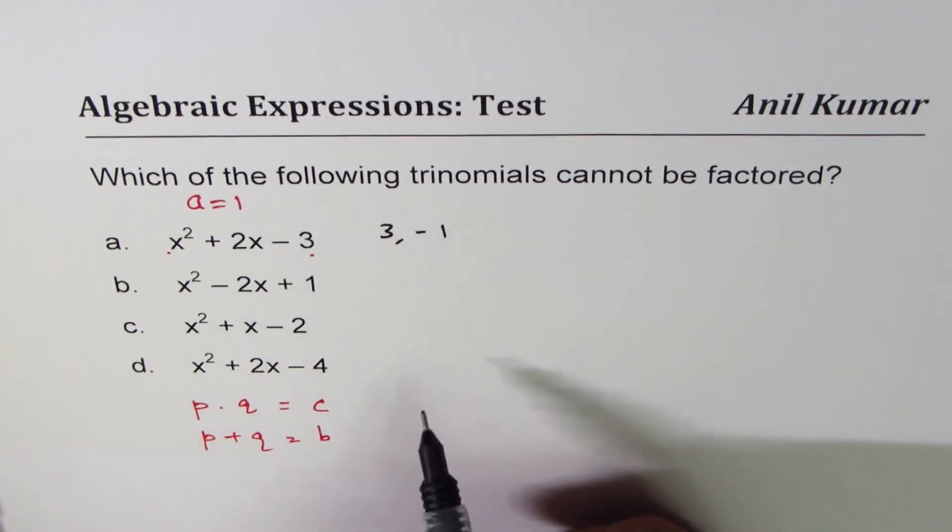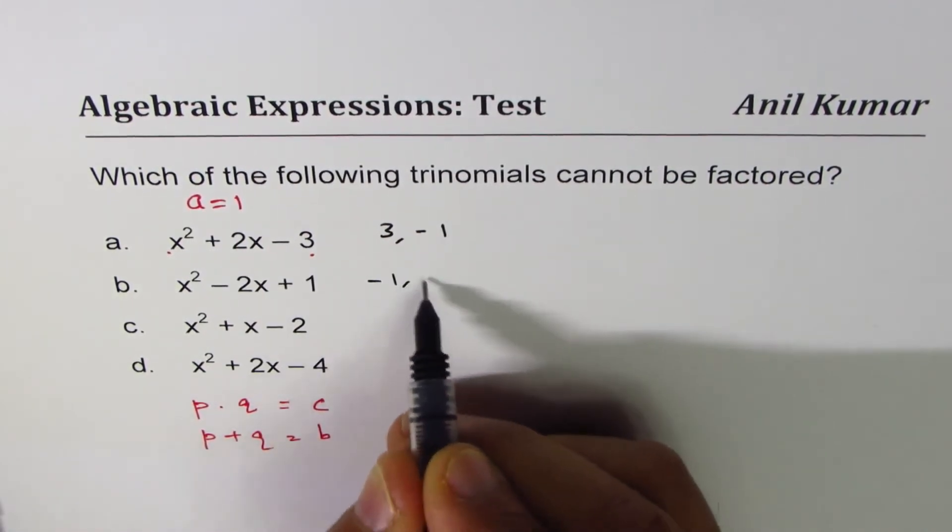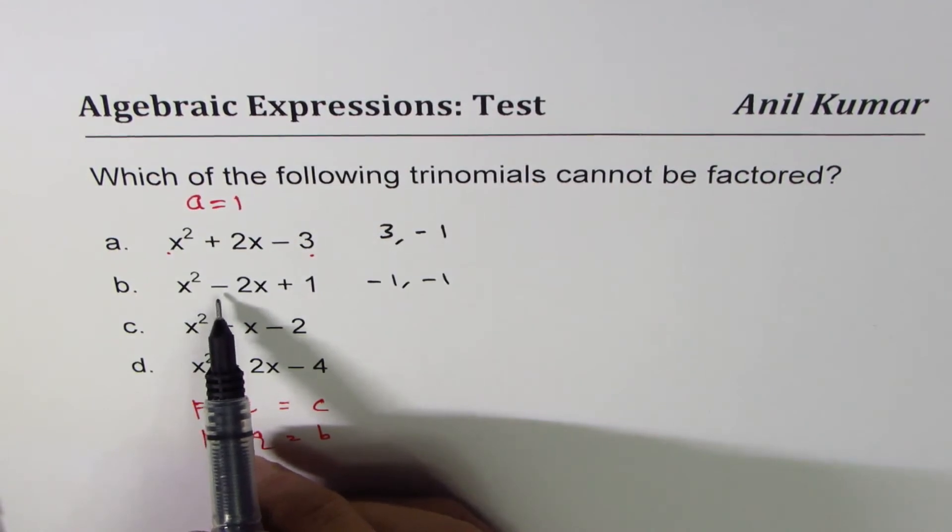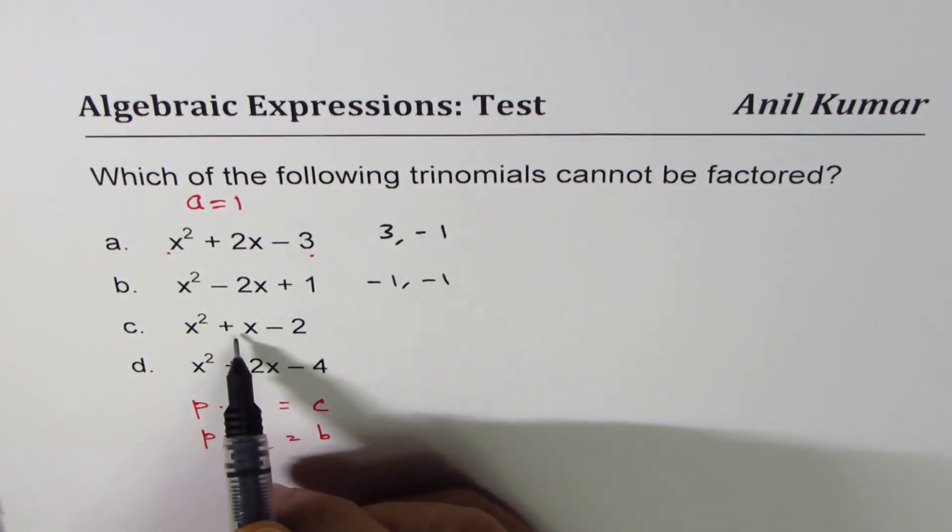The other case, 1, is only possible if I do minus 1 times minus 1 or plus 1 times plus 1. Since we have minus 2, that is the right combination.